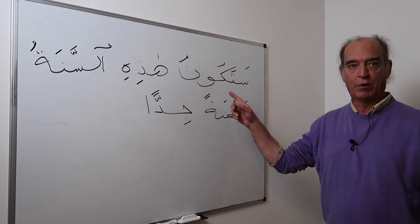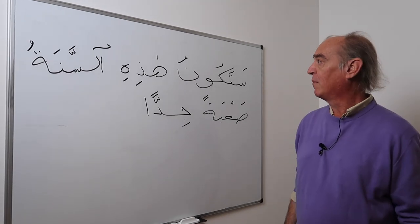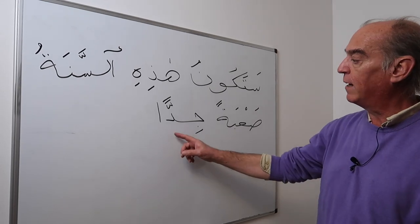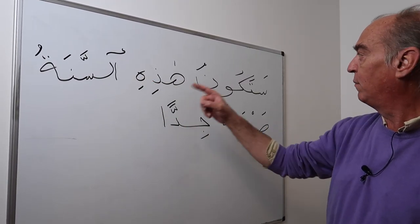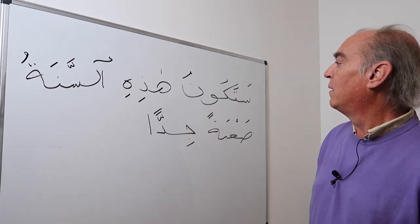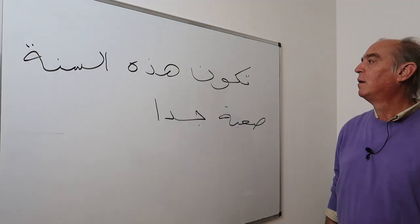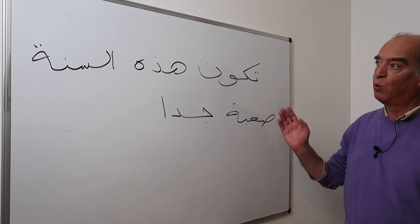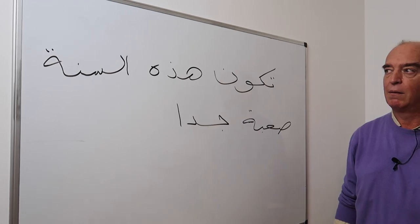Let's use kana now in the future. Sa-takounu haadihi s-sanatu sa'abatan jidan. Haadihi s-sanatu is the ism kana and is in the nominative. Sa'abatan is the khabar kana — that's why it's in the accusative. This year will be very difficult. Some people claim that the sa- prefix is no longer used and that you can say takounu haadihi s-sanatu sa'abatan jidan with the same meaning.